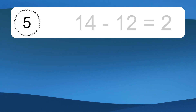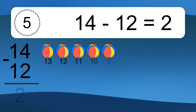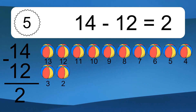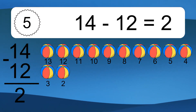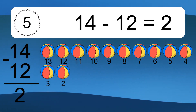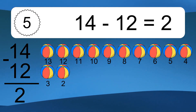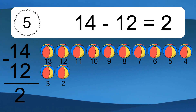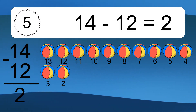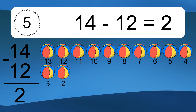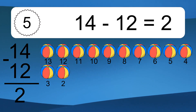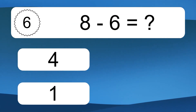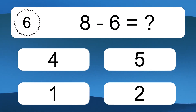14 minus 12 equals 2. Let's count it. 13, 12, 11, 10, 9, 8, 7, 6, 5, 4, 3, 2.